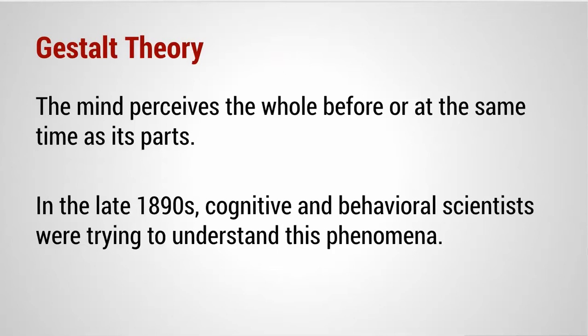In the late 1890s, cognitive and behavioral scientists were trying to understand this phenomenon. When we look at a desk, we don't see a notebook and a computer — we see a desk. When we look at a backyard, we don't see a swing set, a barn, grass, and a tree separately. We see a whole image of a backyard. And then we can look at the tree or the swing set. But we see the whole first.